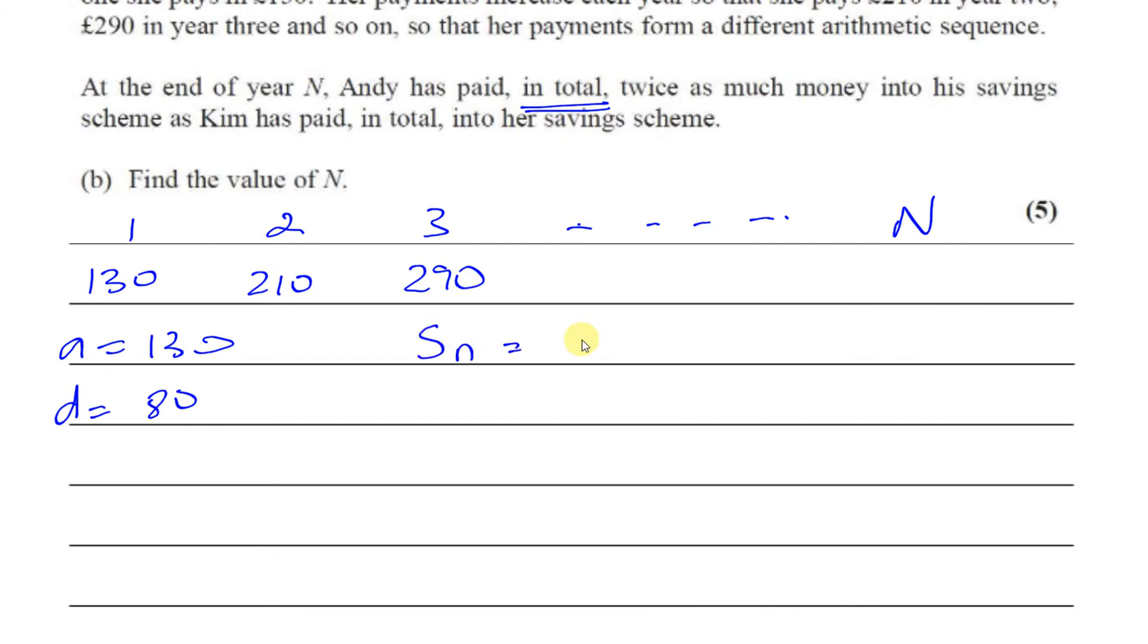The sum of n terms is Sn = n/2 × [2a + (n-1)d]. That formula is given in the formula book. For Kim, when n equals N, her sum SN = N/2 × [2(130) + (N-1)(80)] = N/2 × [260 + (N-1)80].